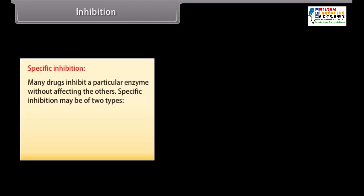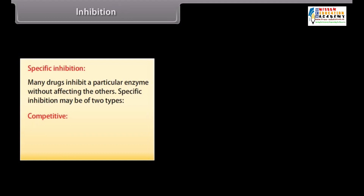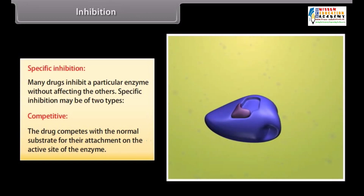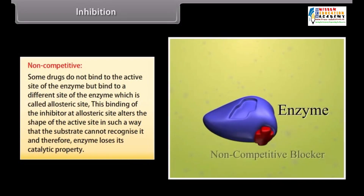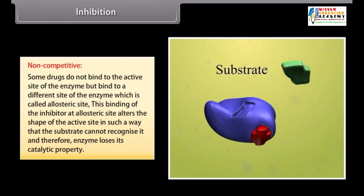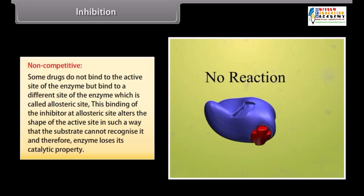Specific inhibition: many drugs inhibit a particular enzyme without affecting the others. Specific inhibition may be of two types. Competitive: the drug competes with the normal substrate for attachment on the active site of the enzyme. Non-competitive: some drugs do not bind to the active site of the enzyme but bind to a different site called the allosteric site. This binding at the allosteric site alters the shape of the active site in such a way that the substrate cannot recognize it, and therefore the enzyme loses its catalytic property.